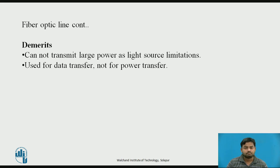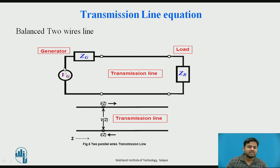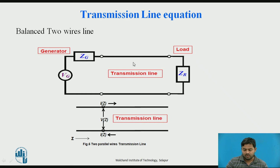Next is the transmission line equation. To derive it, we take the example of two parallel wire lines, as this gives simplicity in solving the equation. There is a sinusoidal alternating current generator, a generator resistance, and a load resistance. As you travel from left to right along the z direction, there is a change in voltage and change in current.